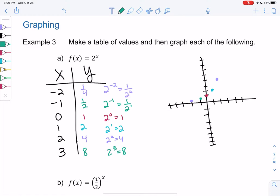So 2 cubed is 8. So at 3, it's going to jump all the way up to 8. So we're going to have a curve that's flat on the left side. It's going to go through 0, 1, and then it's going to spike up on the right side. And that's an exponential function.